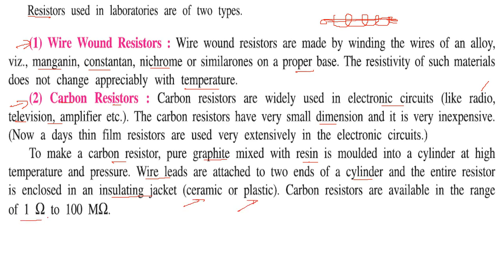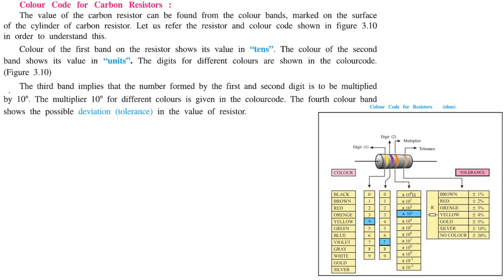Carbon resistors are available in the range from 1 ohm to 100 megaohm. The value of a carbon resistor is found from the colour bands marked on the surface of the cylinder. The colour of the first band shows its value in tens, the second band shows its value in units, and the third band implies that the number formed by the first and second digits is to be multiplied by 10 to the power n. The multiplier 10 to the power n for different colours is given in the colour code chart.